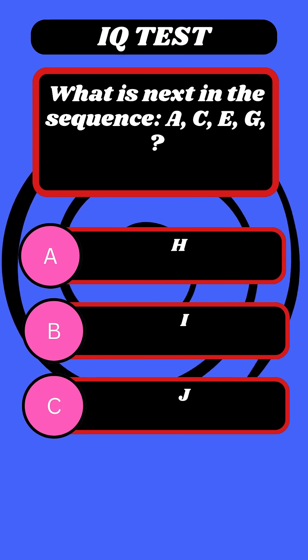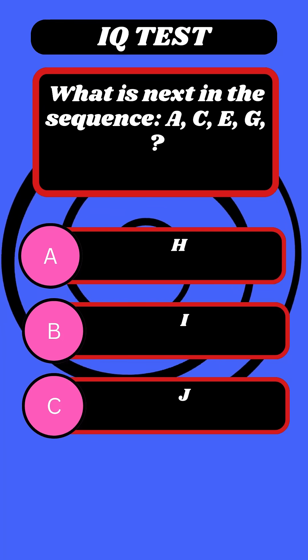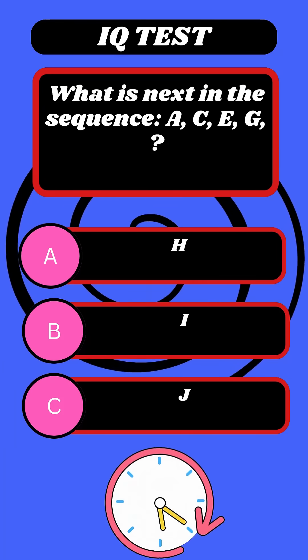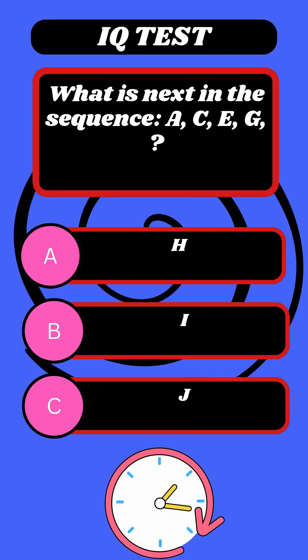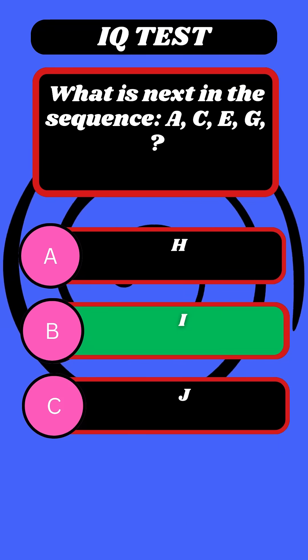Question 2. Letter puzzle. A, C, E, G. What comes next? Times ticking. Answer. I.